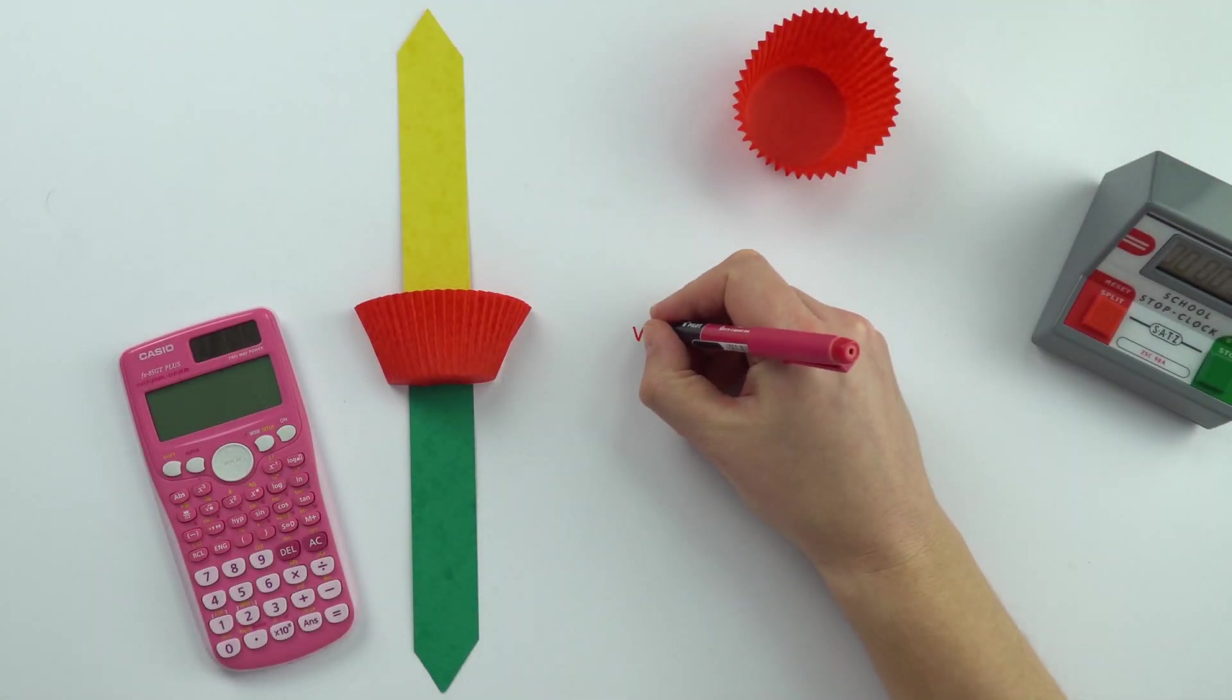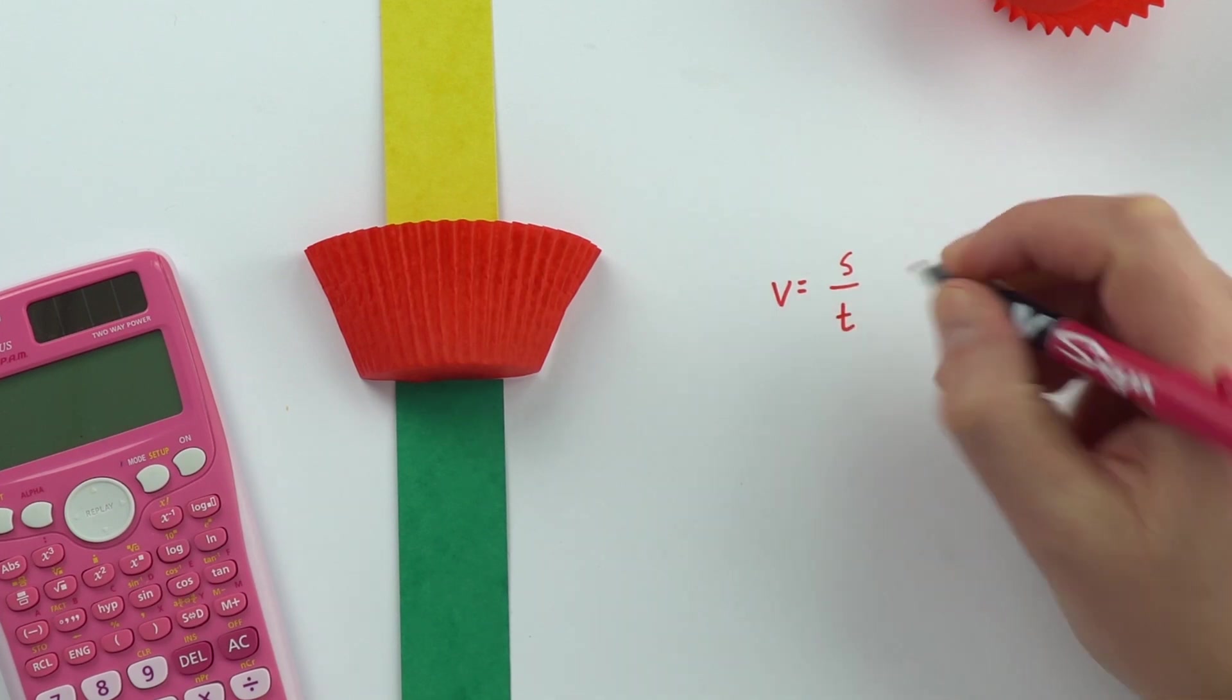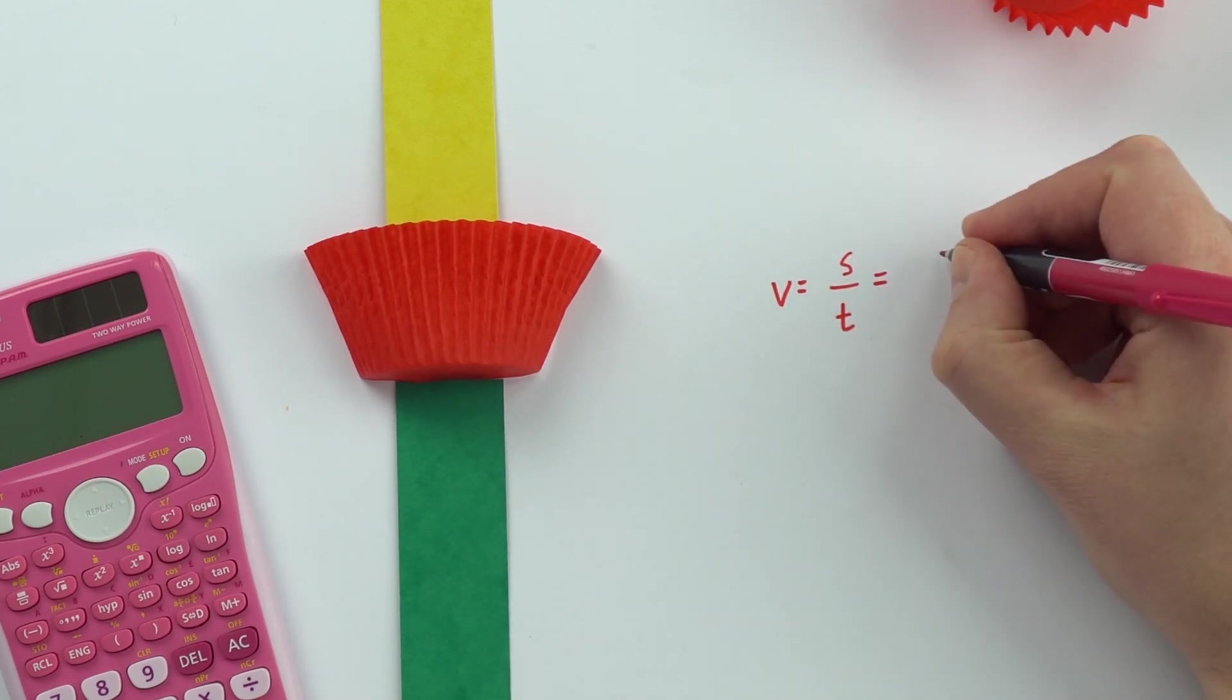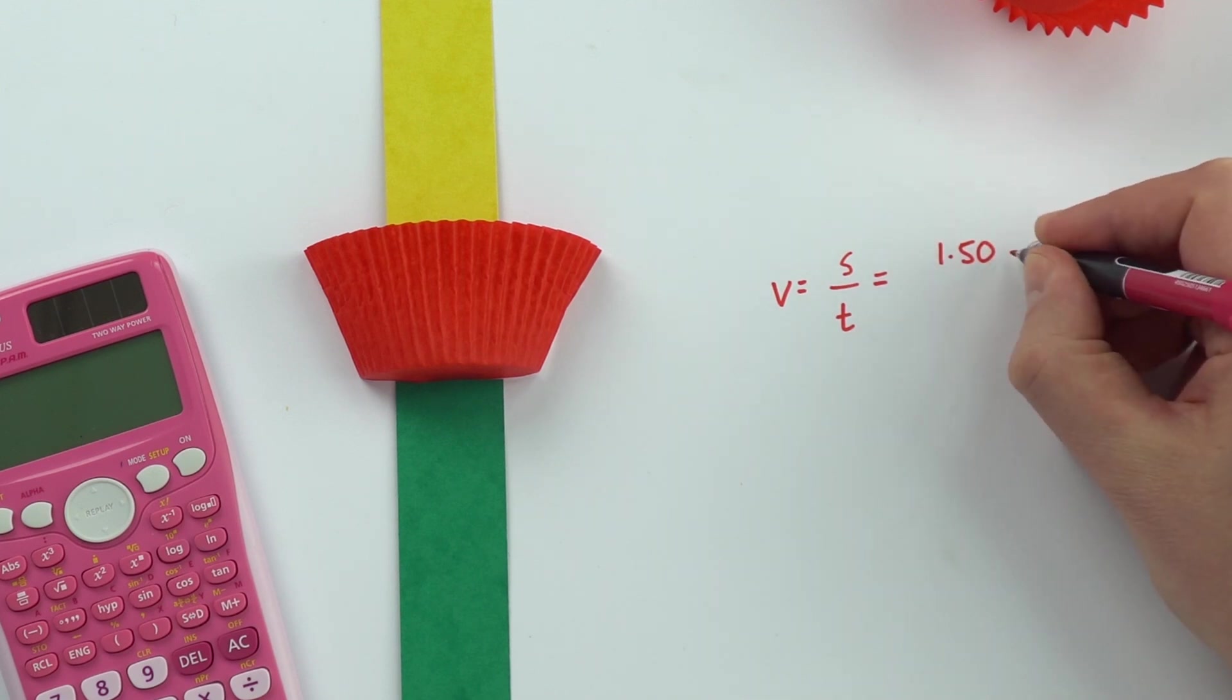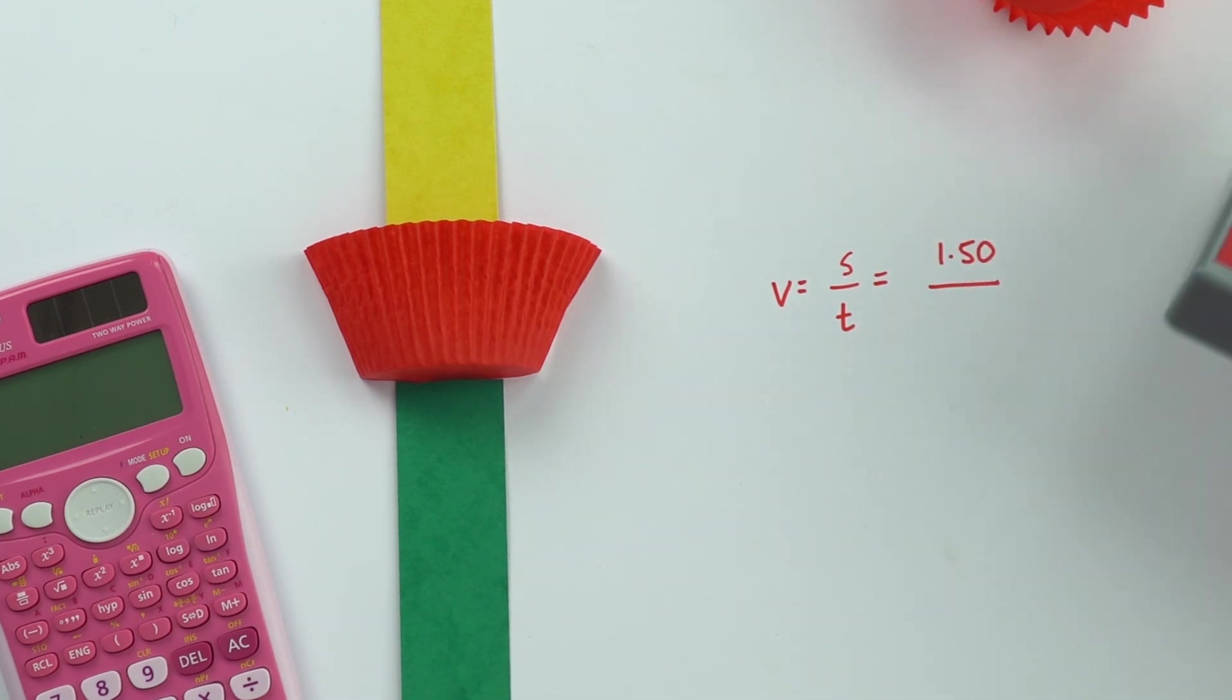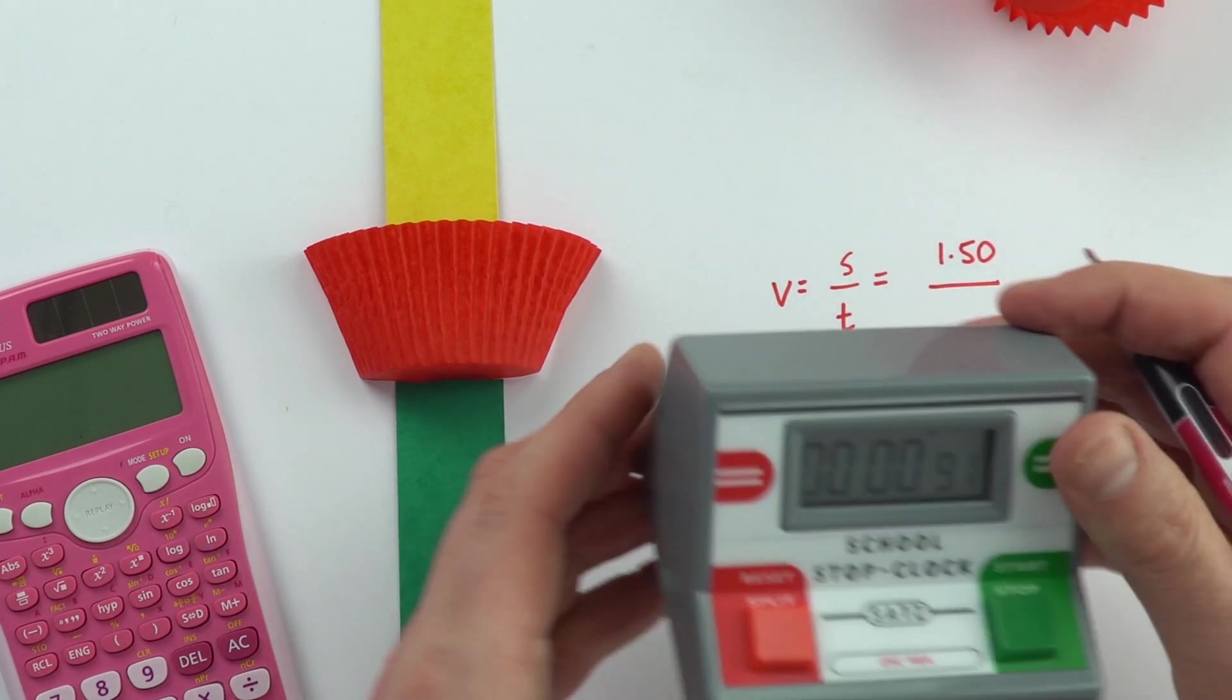To work out the speed, it's going to be equal to the distance traveled divided by the time taken. When I did this, I found the distance I measured was 1.50 meters and the time was 0.91 seconds.